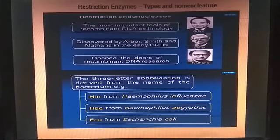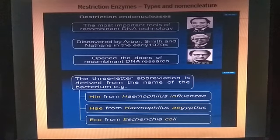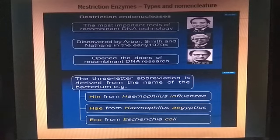Restriction endonucleases are the most important tools of recombinant DNA technology. They were discovered by Herbert Smith and Nathans in the early 1970s, opening the doors of recombinant DNA research. The three-letter abbreviation used in naming restriction enzymes is derived from the name of the bacterium from which they are isolated.